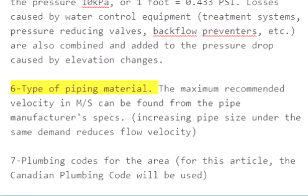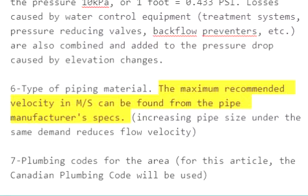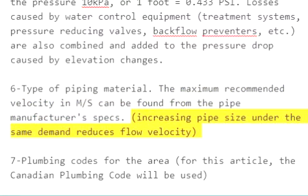6. Type of piping material. The maximum recommended velocity in MS can be found from the pipe manufacturer's specs. Increasing pipe size under the same demand reduces flow velocity.